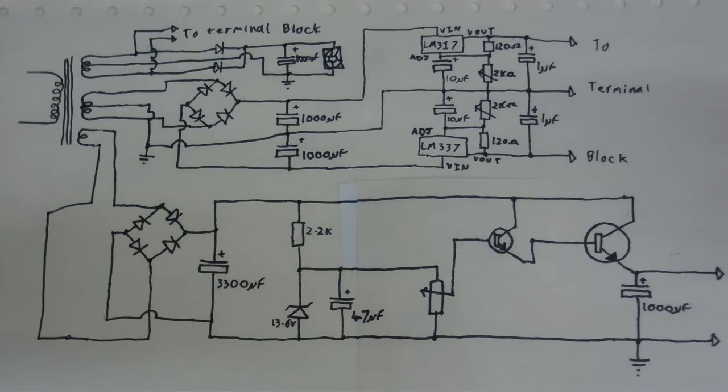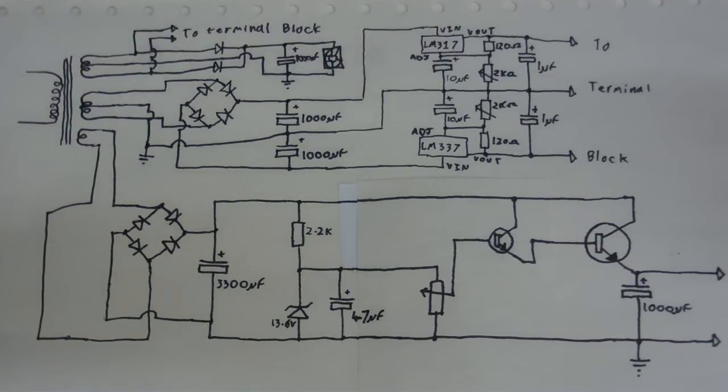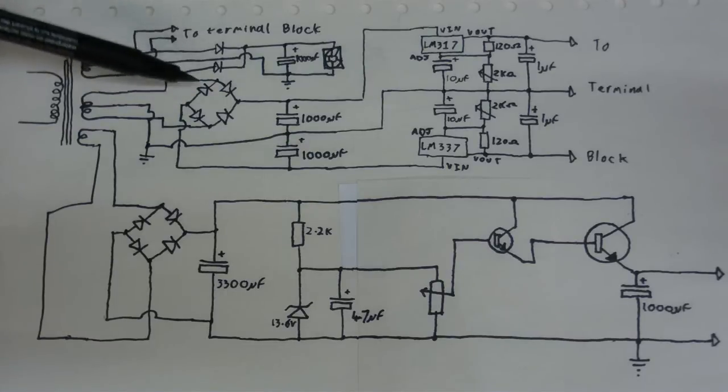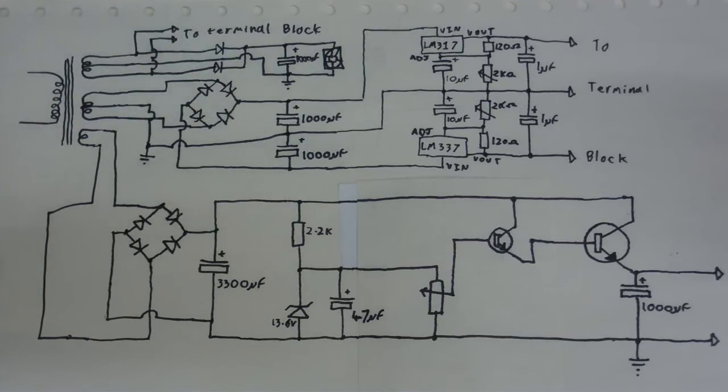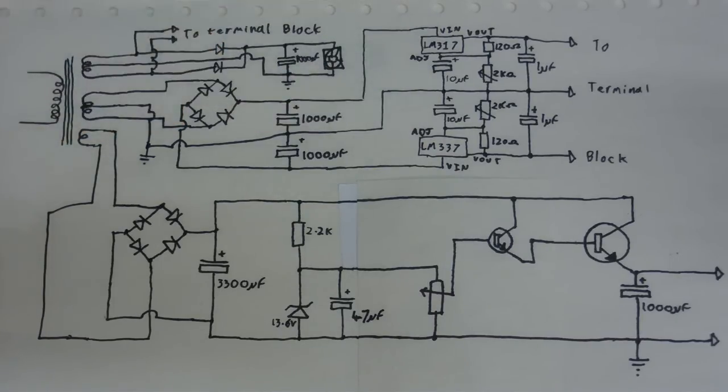Next along, we have the regulated dual rail part of the supply. We've got positive volts, ground, and negative volts there. You can see how it's wired up with the rectifier and the capacitors and the regulator chips themselves. For the positive, I've used an LM317, and for the negative, an LM337.